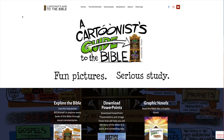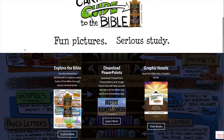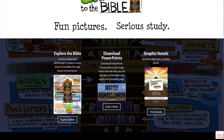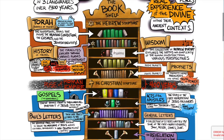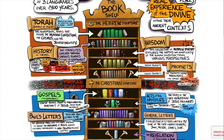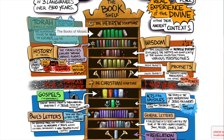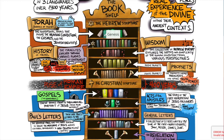There are three basic areas that you can explore here on A Cartoonist's Guide to the Bible. First of all, the main one is what I call the Bible Bookshelf. The idea behind the bookshelf is that the Bible is a library of 66 books divided into two major sections — the Hebrew Scripture and the Christian Scripture. Each shelf is a different genre of literature. If you want to learn about the genre itself you can click on the bubble on the outside; if you want to go directly to a particular book you can just click on that book.